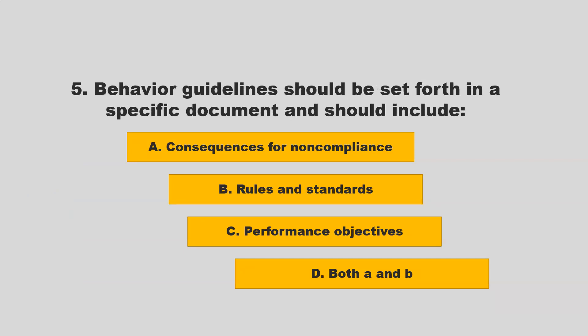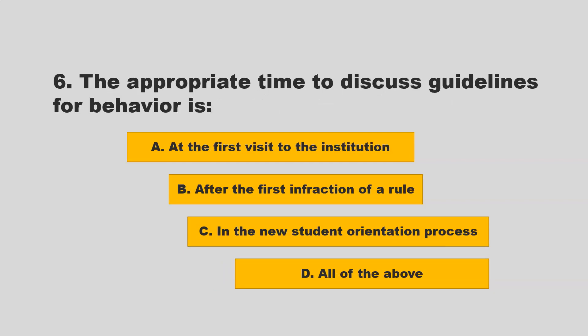Behavior guidelines should be set forth in a specific document and should include rules and standards, performance objectives, or both A and B. If you chose D, both A and B, you are correct.